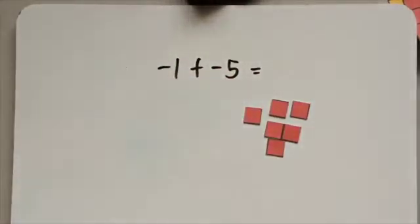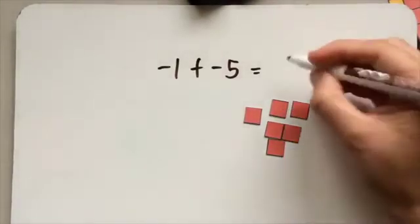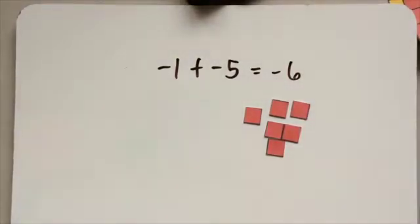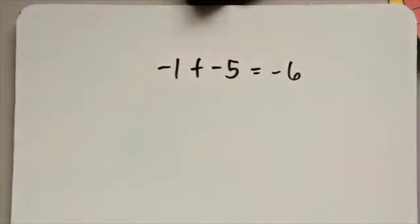I don't have any yellow tiles. They're all red. So I just need to total up. I've got one, two, three, four, five, six negative tiles. So my answer is negative six. Getting the idea of this? Hopefully it's starting to click with you.